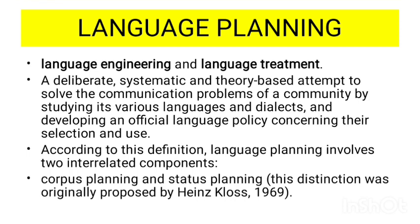The first part of the definition deals with the corpus planning of the language, while the second part deals with status planning. This distinction between corpus planning and status planning was given by Hans Kloss in 1969. Now let's talk about corpus planning and status planning one by one.